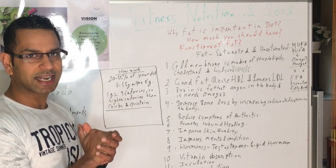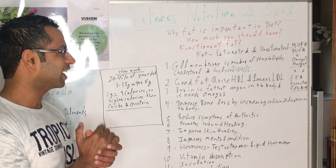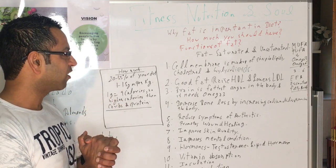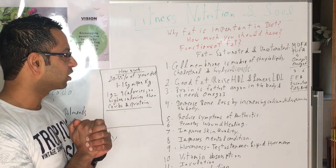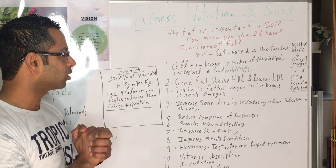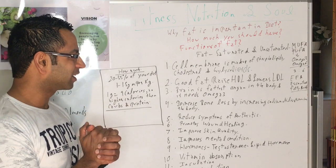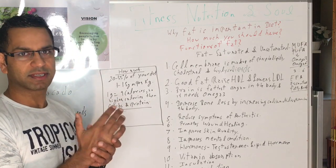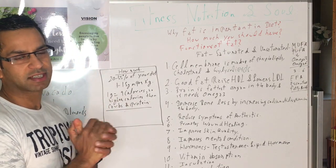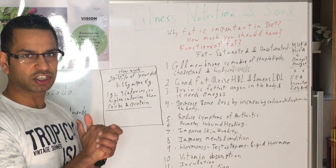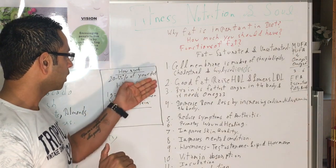Unsaturated fat is divided into MUFA and PUFA. MUFA stands for monounsaturated fatty acids and PUFA stands for polyunsaturated fats. PUFA is then further divided into omega-3 and omega-6, also called EFA, which means essential fatty acids that the body needs for certain functions.